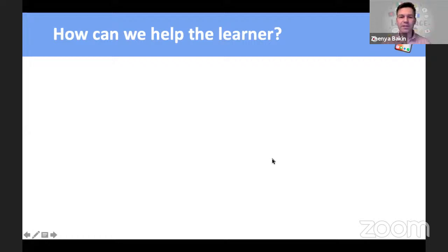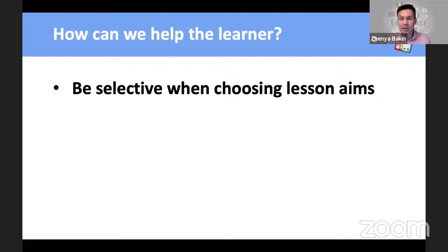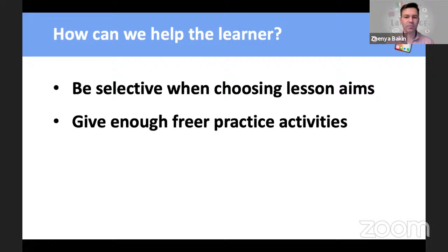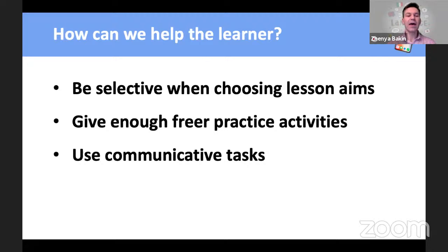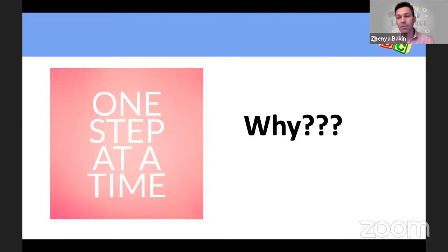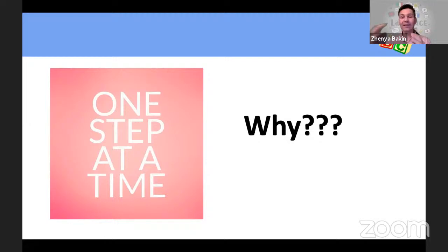A couple of things. First, we need to be selective when choosing lesson aims. If you take a general aim like 'develop speaking,' that's great, but speaking has many subskills and aspects, so we need to be very specific with lesson aims. We should also give enough freer practice activities, and we should use communicative tasks to make the experience authentic. The first principle is one step at a time — students need time to cope with all the tasks the brain handles during a speaking activity. We need to slow down, take one aspect at a time, wait until it's automatized, and then add another.